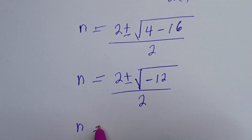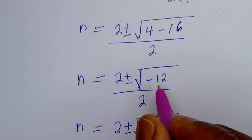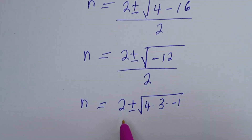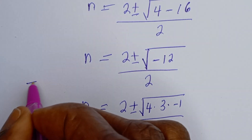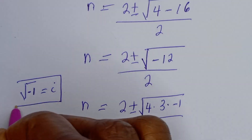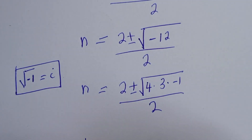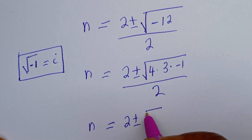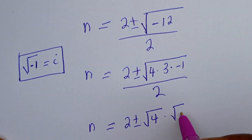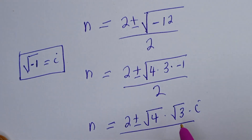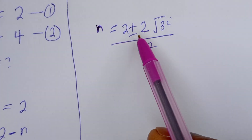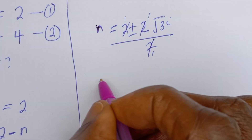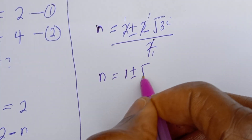Then n equals 2 plus or minus square root of minus 12, which can be written as square root of 4 times 3 times minus 1, over 2. We know that square root of minus 1 equals i. So n equals 2 plus or minus 2 root 3 i, all over 2, which simplifies to n equals 1 plus or minus root 3 i.